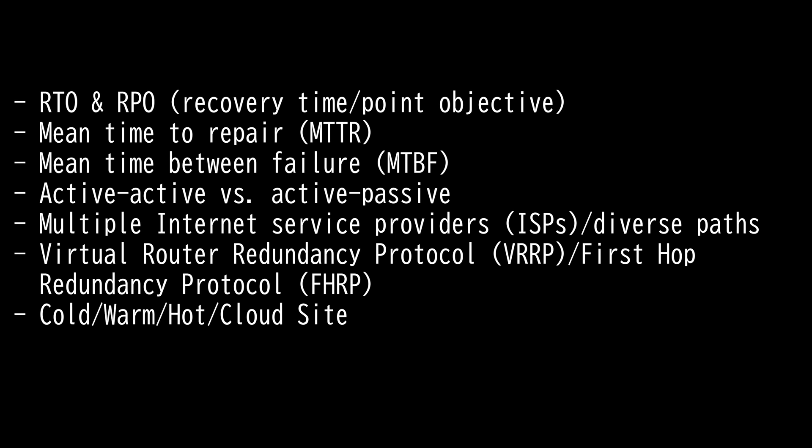This video is on redundancy and high availability concepts. There are several terms you should know as a network admin regarding redundancy and high availability. First, we have RTO and RPO. RTO, or Recovery Time Objective, is the maximum amount of time a process or service is allowed to be down and the consequences are still considered acceptable.